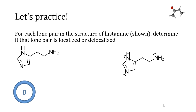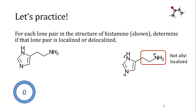Now we will consider each lone pair one by one. The easiest lone pair to assign is the one on the nitrogen at the end of the chain on the right side of the molecule. This lone pair is not in an allylic position. It is not next to a double bond. It cannot participate in resonance. It must be a localized pair of electrons.